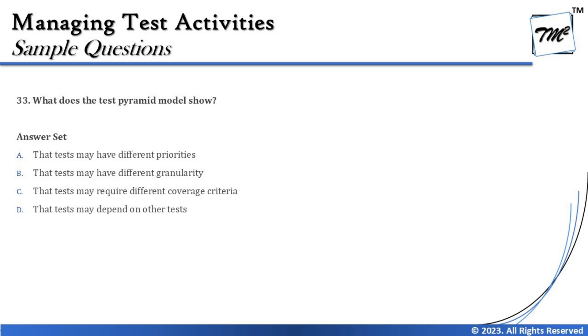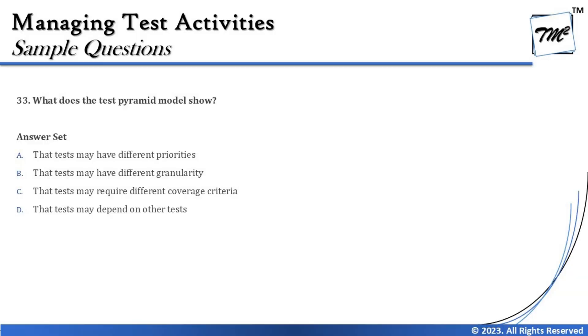Option C says tests may require different coverage criteria — that's a common part of our test process. Any test level such as unit, integration, or system testing would have a coverage criteria to measure effectiveness. But the test pyramid does not define that — it mainly talks about the level of detail of test cases and the amount of automation. Option D says tests may depend on other tests — that's again generic and nothing specifically to do with the test pyramid.